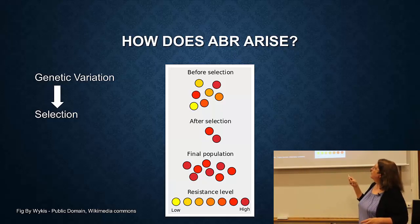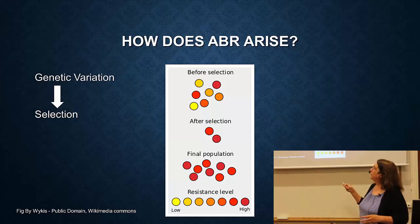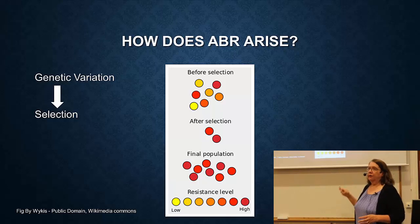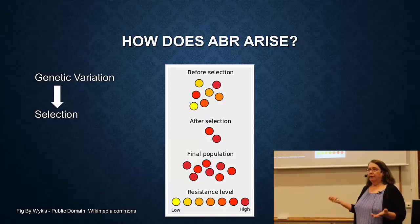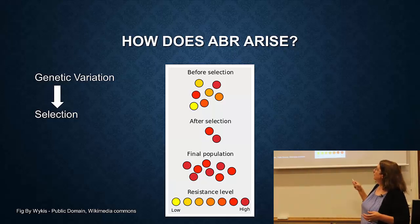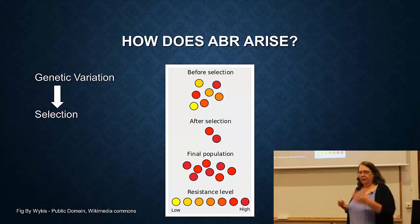So if you have a population with a certain amount of genetic variation, and you add a selection — for example, an antibiotic — after the selection, the only cells that are left are the most resistant. Those resistant ones then grow up and take over the population. That's a simple idea of evolution and selection.